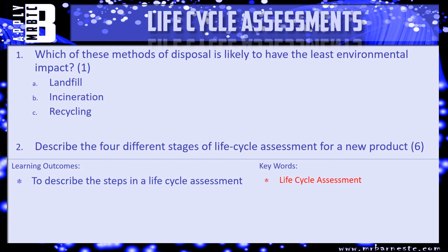Let's have a look at a couple of questions to see how you can put that lifecycle assessment into use. Question one: which of these methods of disposal is likely to have the least environmental impact? A — landfill, B — incineration (burning), C — recycling. Question two is a six-marker: describe the four different stages of the lifecycle assessment for a new product, summarizing what we've looked at in this video. You just need to say what we do in each step. Pause the video, have a go, and we'll see how you've done.